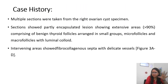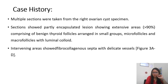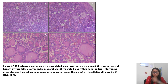Multiple sections were taken from different areas and examined under microscope. What we found was a partly encapsulated lesion with extensive areas comprising benign thyroid follicles — as if we are giving sections from thyroid tissue. Thyroid follicles were seen arranged in small groups — microfollicles and macrofollicles with luminal colloid. The intervening area showed fibromyxoid stroma with delicate vessels.